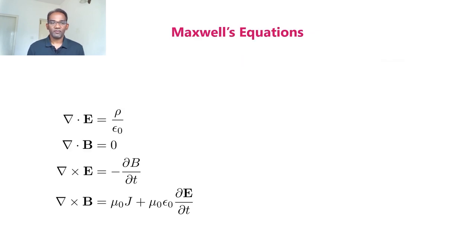Now the four Maxwell's equations read: del dot E equal to rho divided by epsilon zero; del dot B equal to zero; del cross E equal to minus ∂B/∂t; and del cross B equal to mu zero j plus mu zero epsilon zero ∂E/∂t.